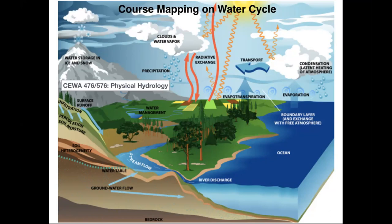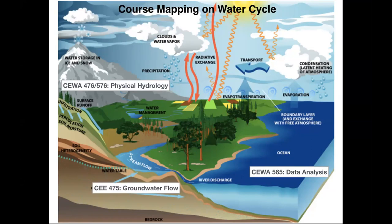Physical hydrology, one of our core courses, covers water storage in ice and snow and how it enters the water system. We have data analysis courses that look at time series analysis and spatial analysis — if you have gauge data from USGS, what can you do with it and what is the statistical confidence on your analysis. We also have courses addressing what happens when water percolates into the soil and starts moving through the system, which is groundwater flow.